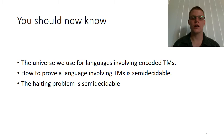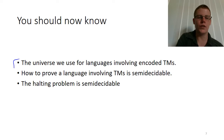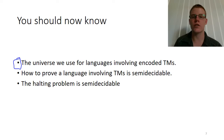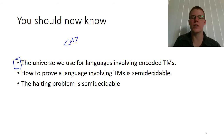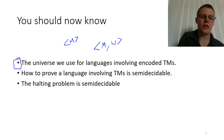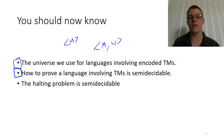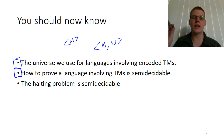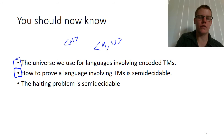To summarize: when talking about languages involving encodings of Turing machines, the universe is either all valid encodings of Turing machines, or all syntactically valid Turing machine-input pairs. We can prove such a language is semi-decidable by constructing a machine that simulates the given Turing machine and does something based on the result of that simulation. And finally, the halting problem H is semi-decidable — that is, H is in SD.